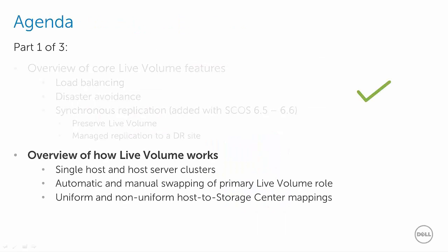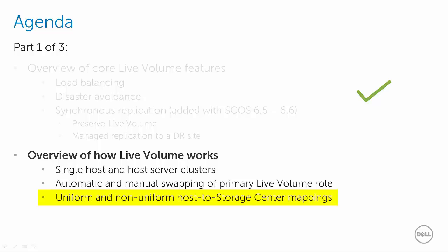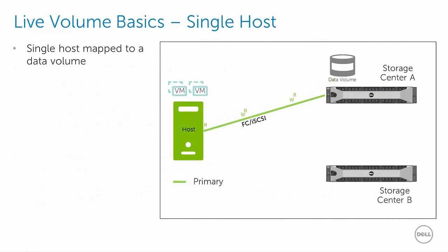Now that we have reviewed some of the core features of live volume, let's explore in more detail how live volume actually works, starting with a single host and then with multiple hosts. We'll also show how an environment can be configured so that live volume will automatically swap live volume roles. An automatic role swap occurs based on configurable I/O thresholds and is different than auto-failover, which occurs as the result of a DR event. We'll cover auto-failover in parts 2 and 3 of this video. Let's start with a simple scenario with a single host server with a VM workload that is mapped to a data volume on Storage Center A. The read and write I/O is using one or more data paths configured between the host and Storage Center A.